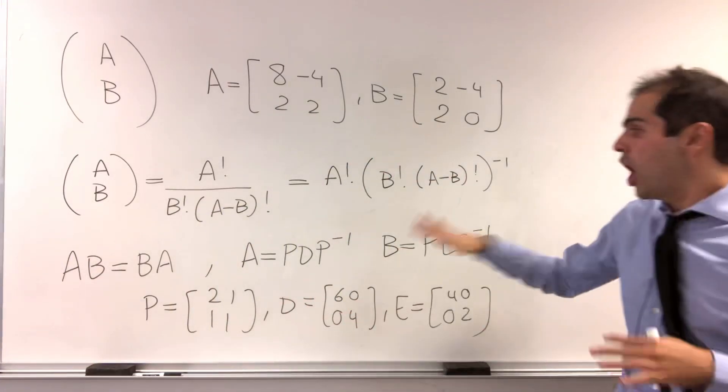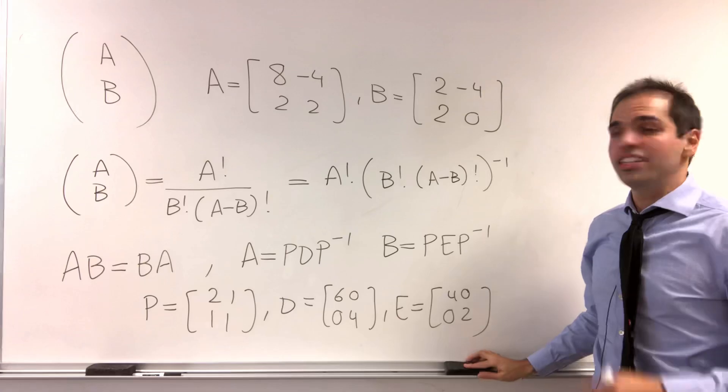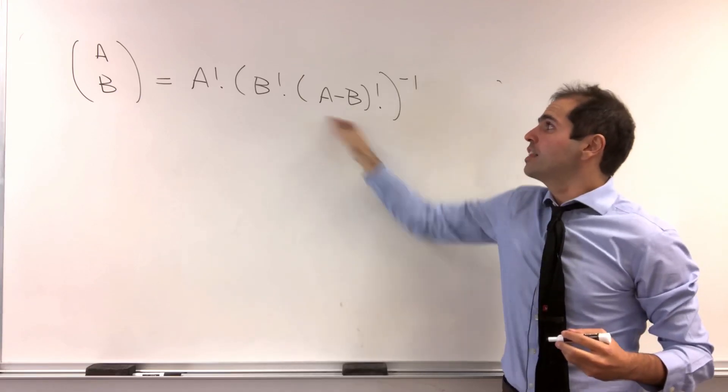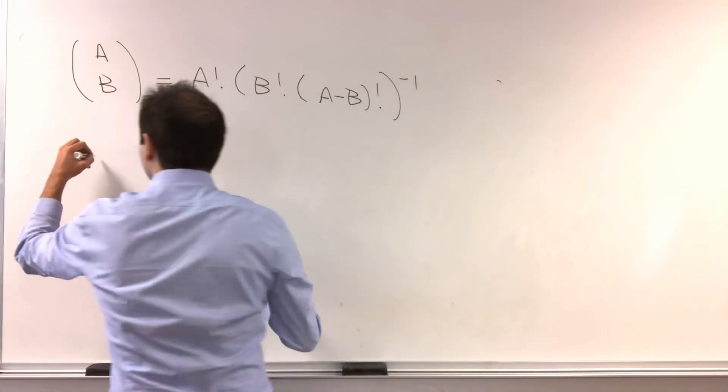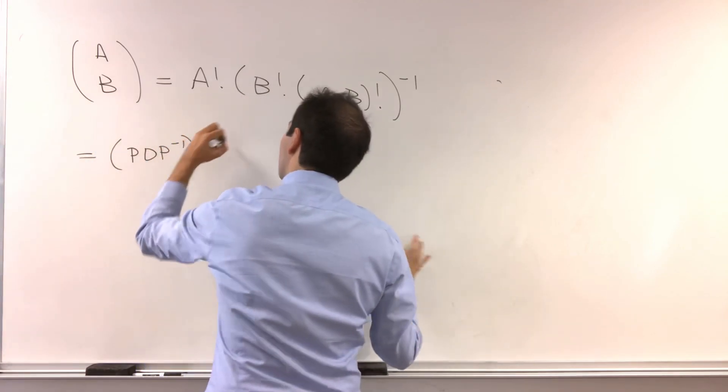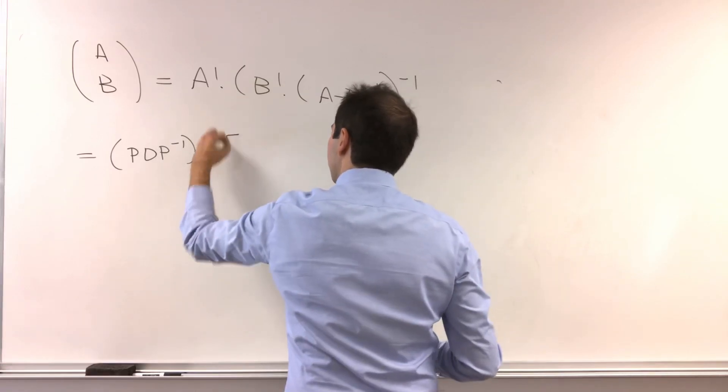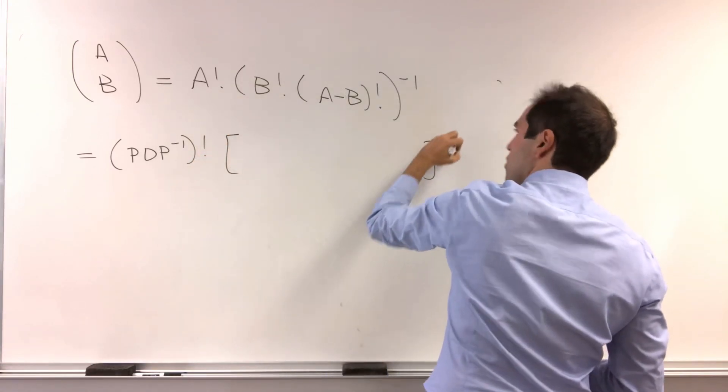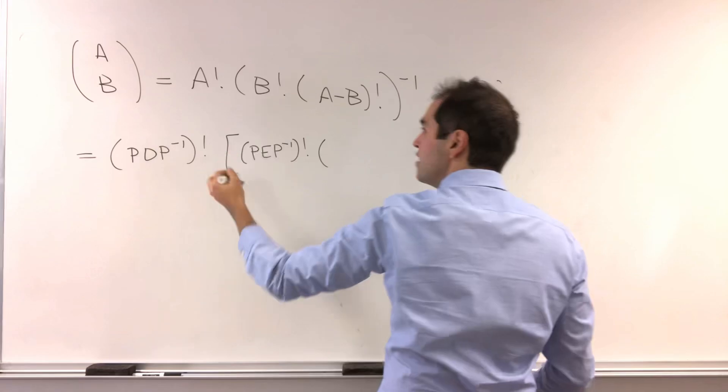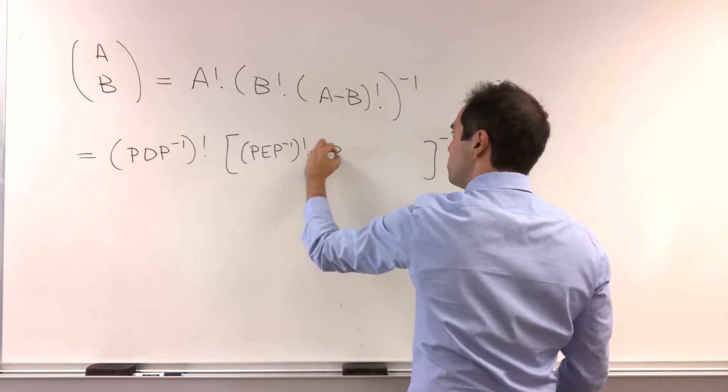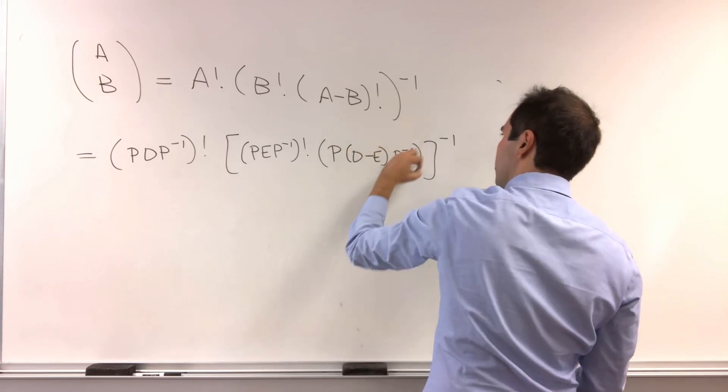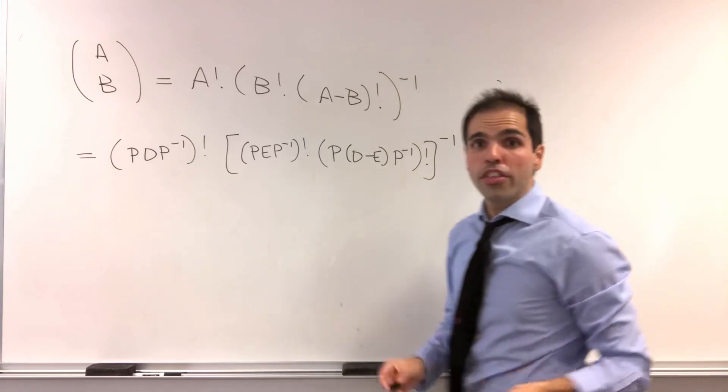Okay. And now, let's see how this is useful in our definition of a choose b. Because remember, a choose b, it's a factorial times blah inverse. Now, if a is p, d, p inverse. So this is p, d, p inverse factorial. And then times, let's do it like that, p, e, p inverse factorial. And then a minus b, because again, with the same p, this becomes p times d minus e, p inverse. And then factorial.